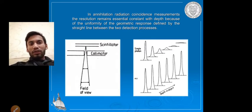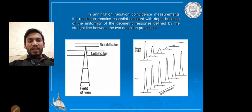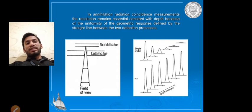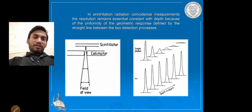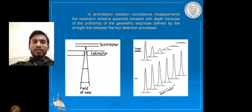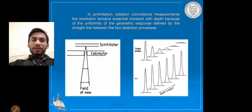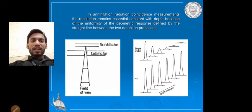For single photon imaging, intensity is highest initially then continuously decreases as depth in the object increases. When object depth increases, the single photon cannot always penetrate due to uniformity of the geometric response defined by the straight line between the two detection processes. This diagram — with single photon intensity vs. depth in the object, showing scintillator, collimator, and field of view — should be remembered for SPECT.